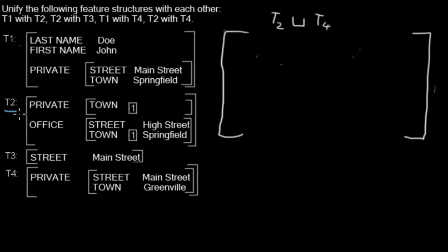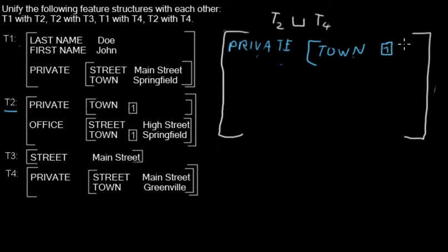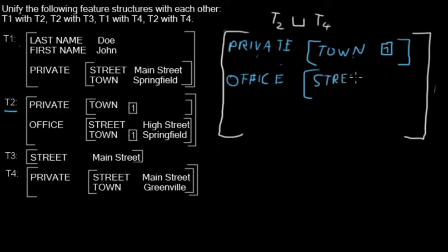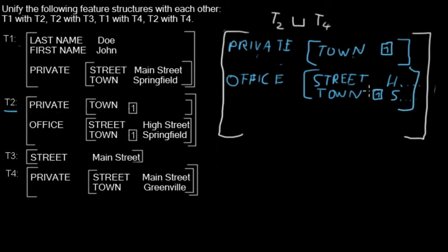I will start with all properties from t2. We have 'private' with a feature structure 'town' with a pointer. Then we have 'office' with two properties: 'street' with whatever the value is, and 'town' with a pointer — the same pointer as the private one — and with a value. Those are all properties from t2.